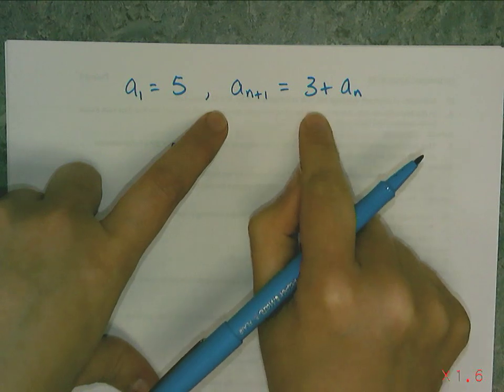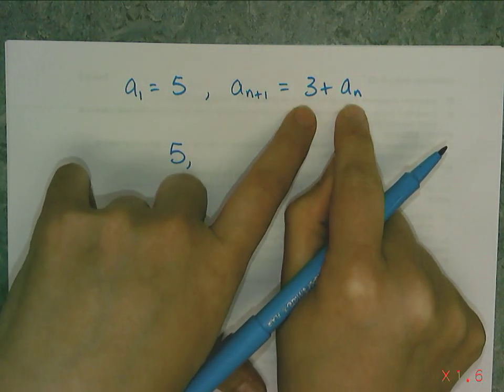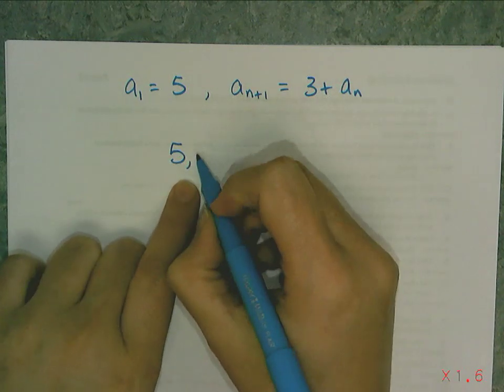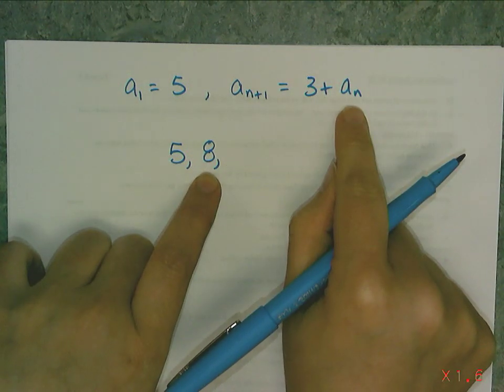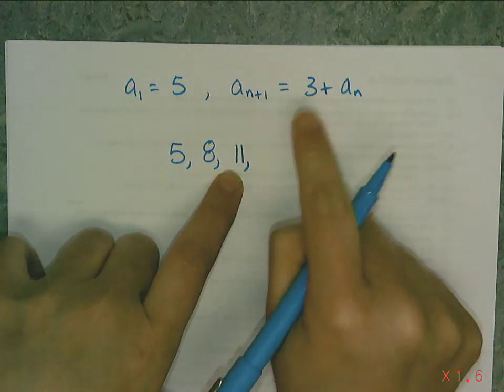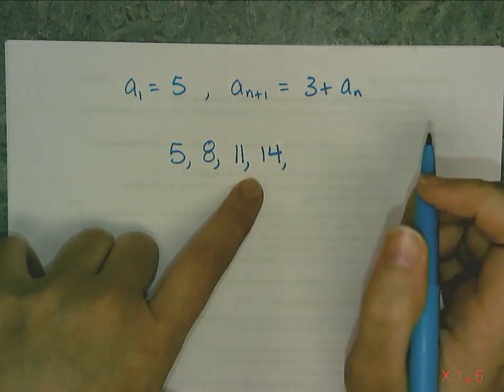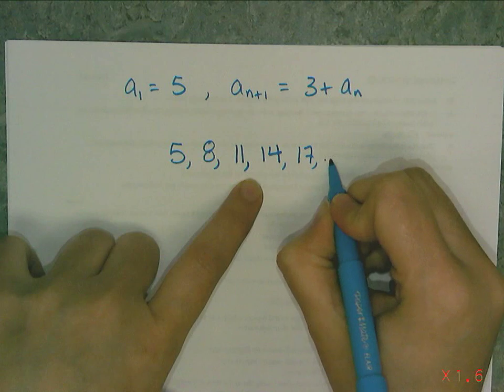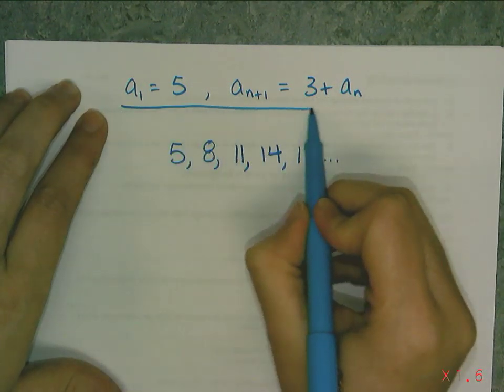And then I think, okay, well, this thing here tells me to take the previous term and add 3 to it. So I take 5, and I add 3, and I get 8. So then this rule tells me to do the same thing with the next number. I take 8, add 3, and I get 11. And I take 11, and I add 3, and I get 14. And I take 14, and I add 3, and I get 17. And I've just generated the first 5 terms of the sequence described by this rule.